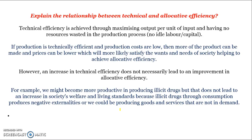Explain the relationship between technical and allocative efficiency. Technical efficiency is achieved through maximising output per unit of input, having no resources wasted in the production process. If production is technically efficient and production costs are low, then more of the product can be made at a lower price, which allows consumers to satisfy more of their wants and needs, which maximises allocative efficiency. So technical efficiency leads to lower prices, which helps consumers satisfy more of their wants and needs, making it more allocatively efficient.